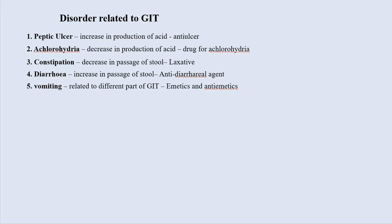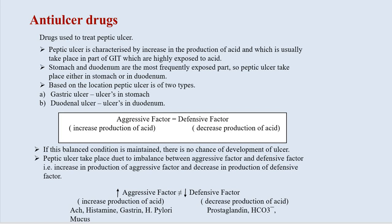We'll move towards our first disorder — anti-ulcer drugs or peptic ulcer. Peptic ulcer is characterized by increase in the production of acid, which usually takes place in the parts of the GIT most highly exposed to acid. Stomach and duodenum are the most frequently exposed parts, so peptic ulcer takes place either in the stomach or duodenum. Based on location, peptic ulcer is of two types: gastric ulcer (ulcers in the stomach) and duodenal ulcer (ulcers in the duodenum).